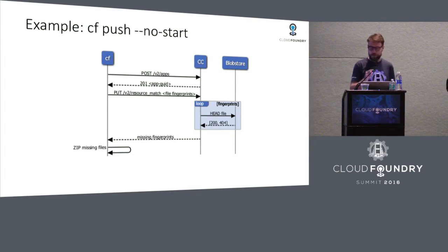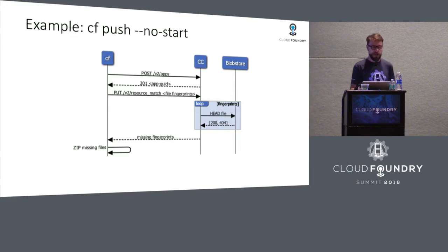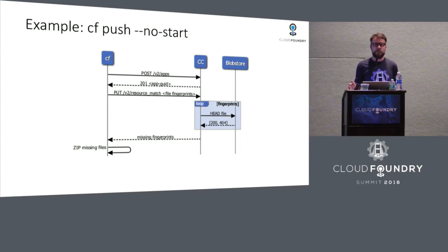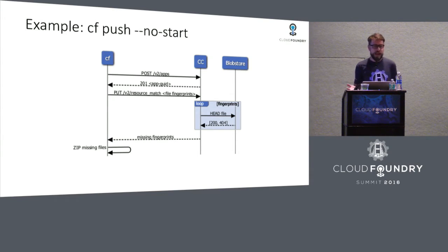The POST happens, and the Cloud Controller creates a bunch of database entries. Amongst others, there will be a row in a table called apps that resembles your app. Cloud Controller is going to assign a globally unique ID or GUID to your app and pass that back to the CLI. The next big piece that happens with regards to bits is what we call resource matching. The Cloud Controller keeps a global cache of all application artifacts — all the files that your apps consist of — across all orgs and spaces. Like any other cache, it prevents us from uploading the same file over and over again.